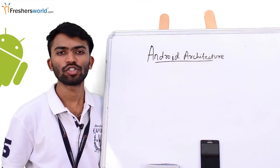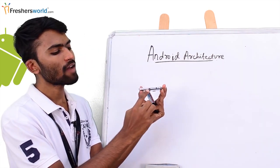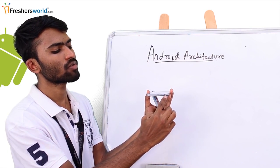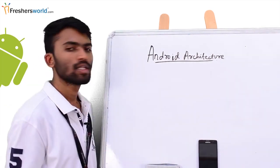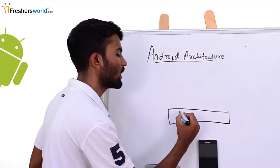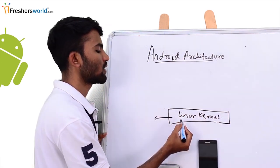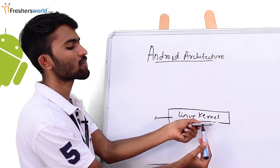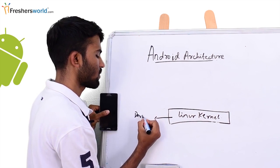Before starting with Android architecture, I just want to show you my Samsung phone. If you can see my Samsung phone, I have a charger plug-in and I have a headset plug-in. This is nothing but a device driver. The Android architecture consists of four layers. The base layer would be the Linux kernel. What does the Linux kernel consist of? As I showed you, this is my headset jack and this is my charger jack — these are nothing but device drivers.